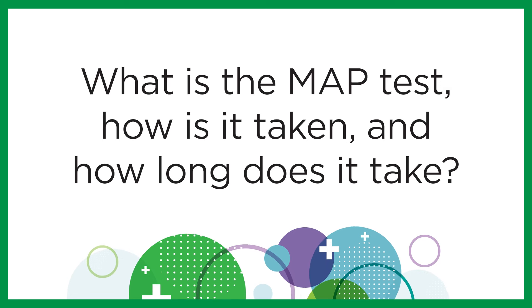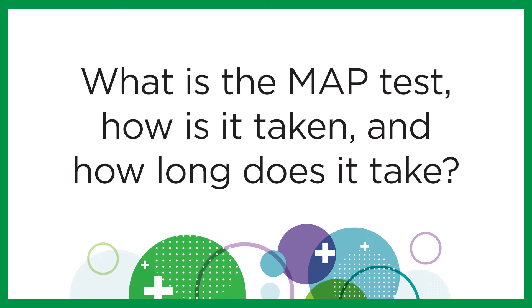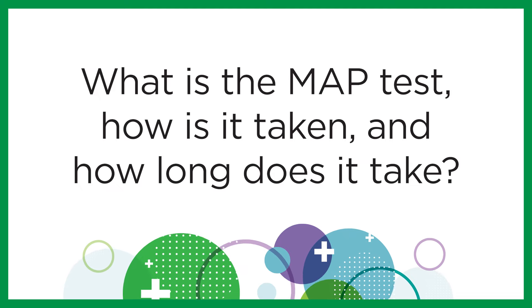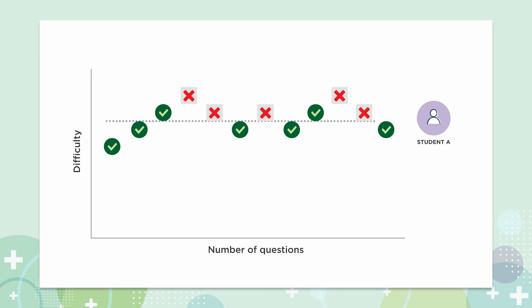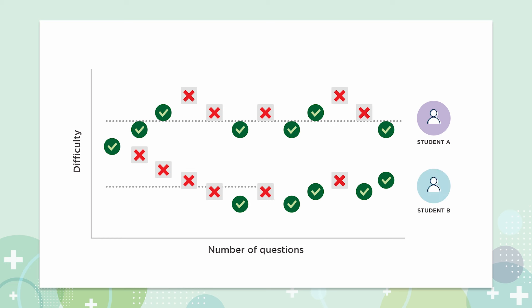First, let's start with the basics. What is the MAP Growth Test? How do students interact with it, and how long does it take? MAP Growth measures student achievement and academic growth over time between testing sessions, usually fall, winter, and spring. The test is adaptive, taken on computers, and aims to constantly change the difficulty of questions so that a tester only gets 50% of the questions correct. This shows us the sweet spot of where a student is on their learning journey. That means that no two tests are alike, as no two students will receive the same questions in the same sequence.